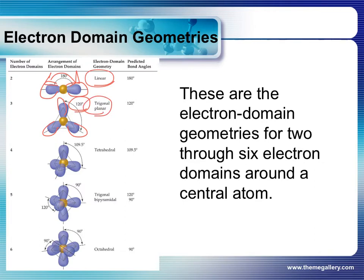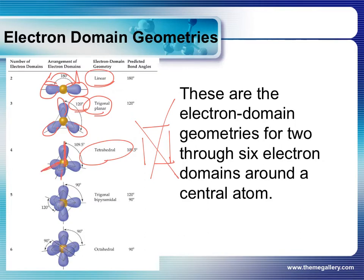If there are four areas of electron density, most people might say four corners of a square — that is absolutely not correct. If you have four things in three-dimensional space, they will adopt what we call a tetrahedral shape. Imagine a tripod that you put a camera on where you have a stem sticking up and then three legs sticking down. That's kind of the shape of a tetrahedral, and that's how four things can get as far away from each other as possible in space.